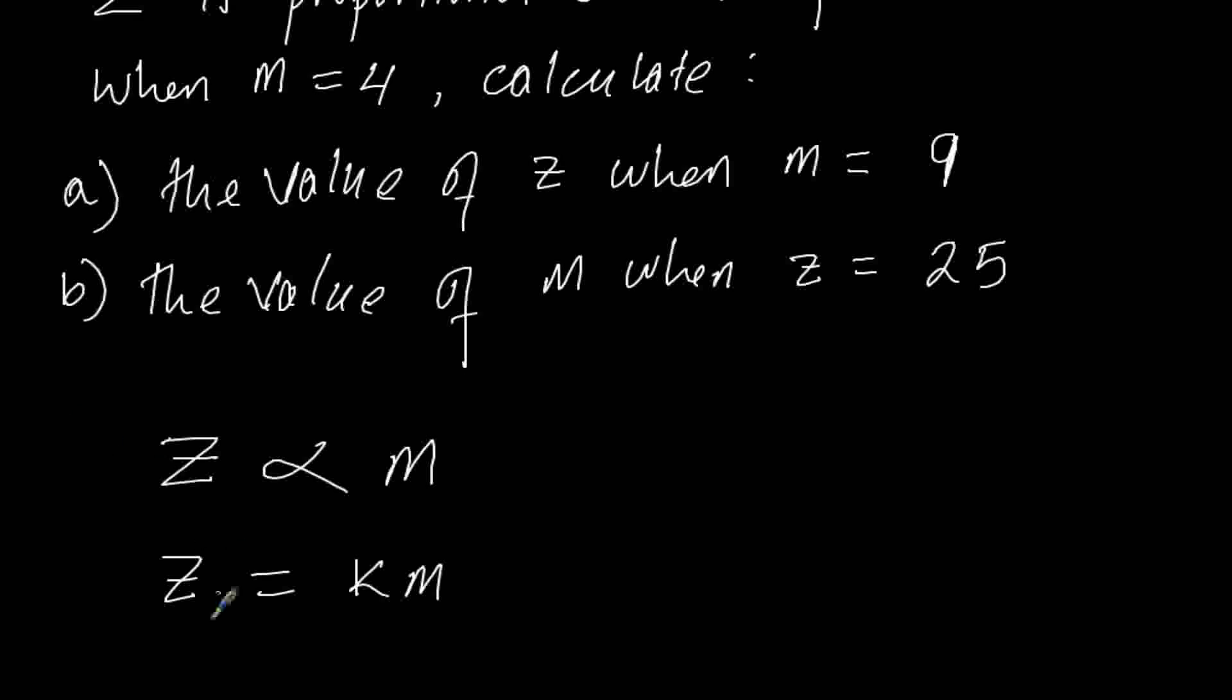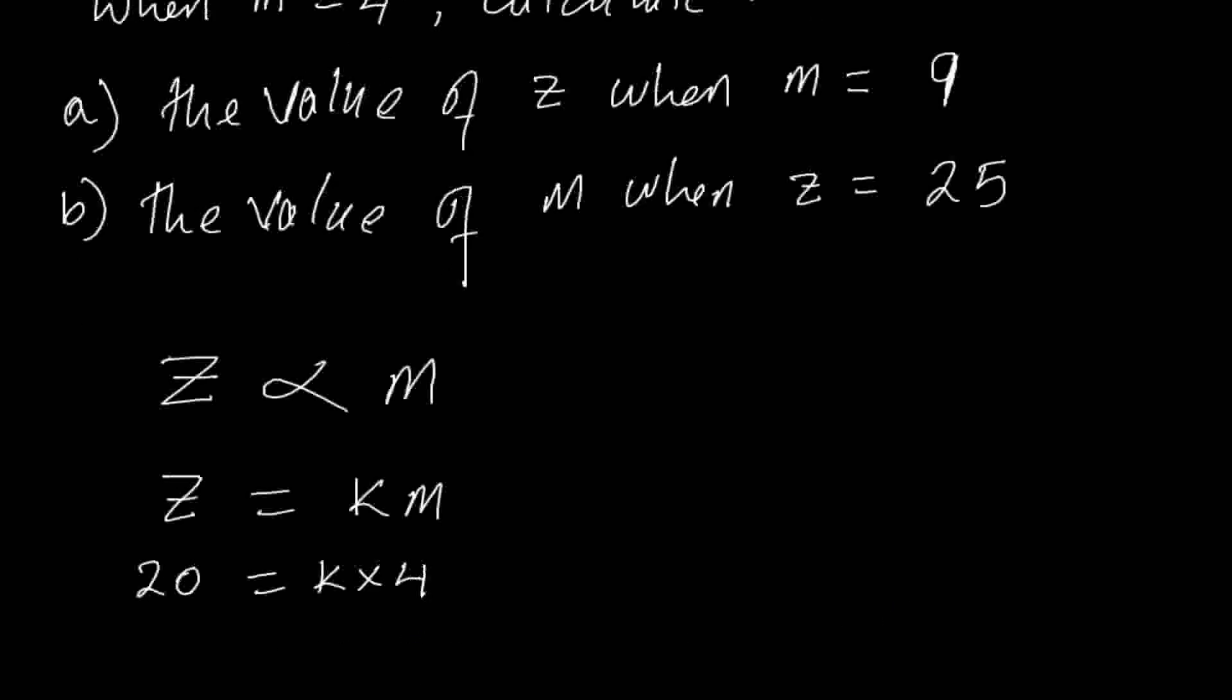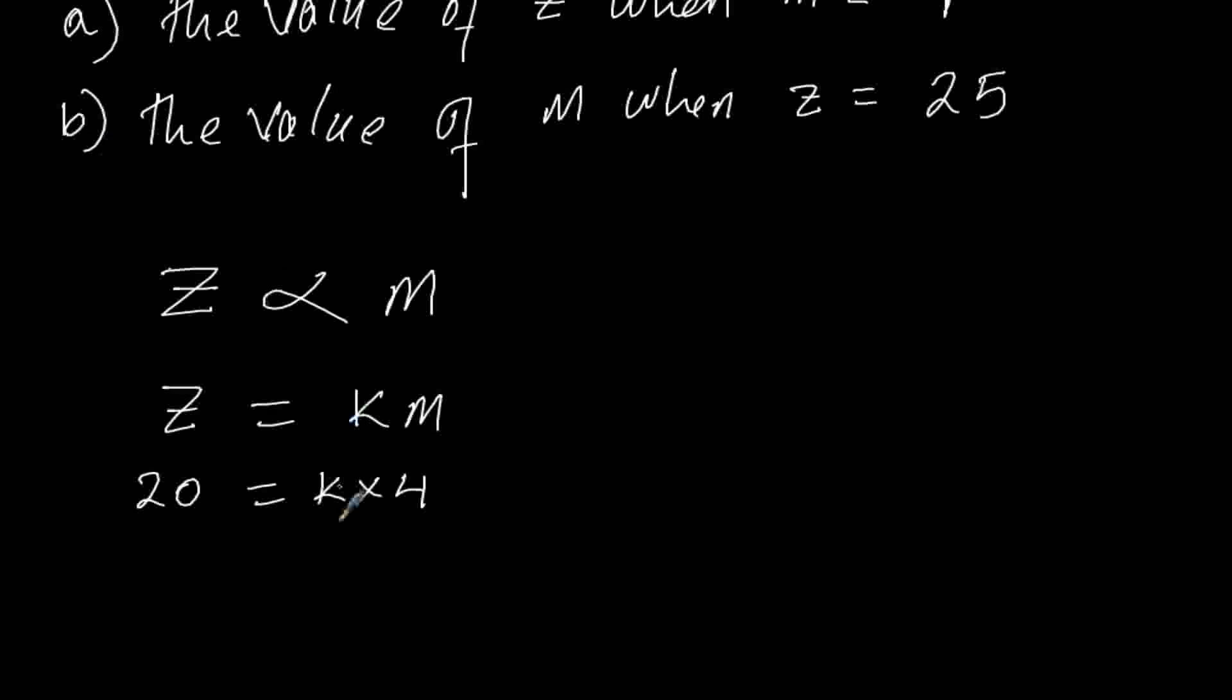Z equals 20 when M is 4, so that will be K times 4. That will give us K to be 20 divided by 4. So K equals 20 divided by 4, which is 5. So rewriting our equation...